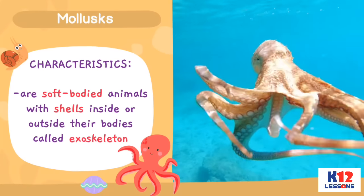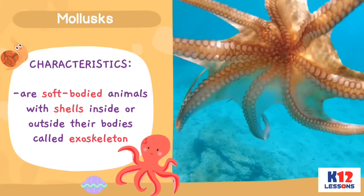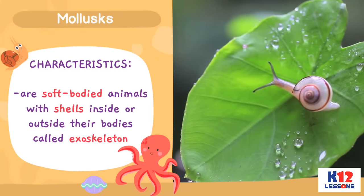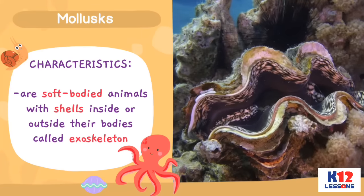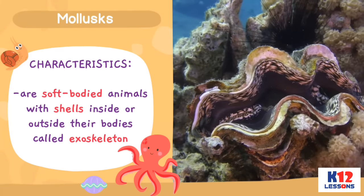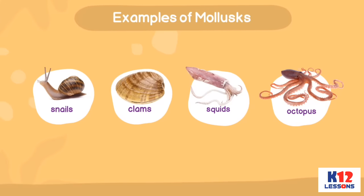Molluscs: They are soft-bodied animals with shells inside or outside their bodies, called exoskeleton. Examples of molluscs: snails, clams, squids, and octopus.